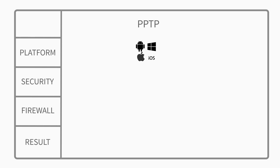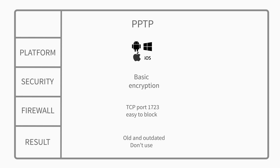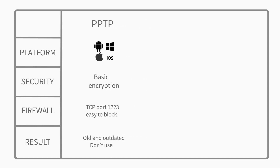However, it's not a secure VPN protocol and can be easily decrypted by malicious third parties and man-in-the-middle attacks. PPTP requires both TCP port 1723 and the GRE protocol, which makes it easy to block PPTP connections. Bottom line: avoid this protocol and only use it if it's absolutely necessary for compatibility.